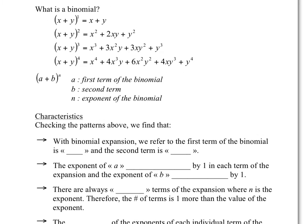Let's look at some patterns that are developing. With the binomial expansion, the exponent of a — looking at x — goes 1, 0 for power 1; 2, 1, 0 for power 2; 3, 2, 1, 0 for power 3; and 4, 3, 2, 1, 0 for power 4. So the exponent of the first term is decreasing by 1 on each term.